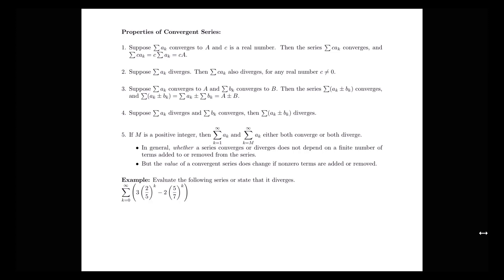Suppose that we have a sum of ak that converges to a number a, and little c is a real number, then the series — the sum of a constant c times ak — also converges, and we can pull that constant out in front of our sum. So the sum of c times ak is equal to c times the sum of ak, meaning the value of that sum is just the constant c times the value a that the sum of ak converged to.